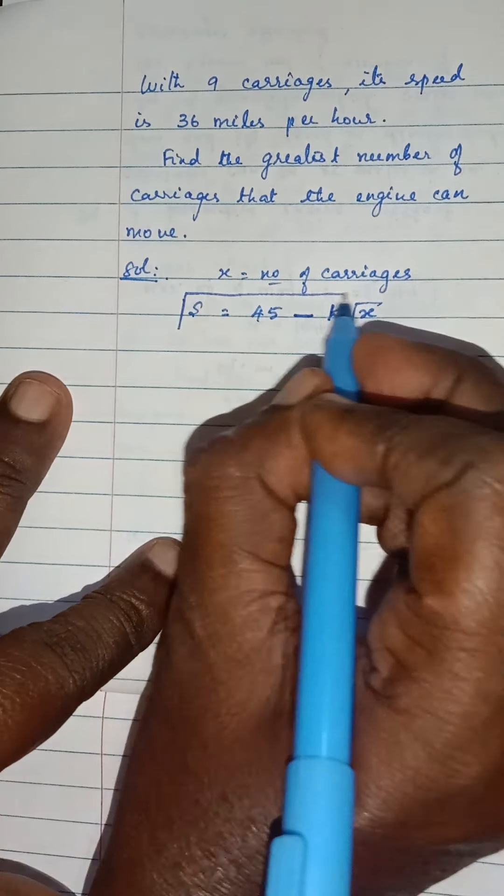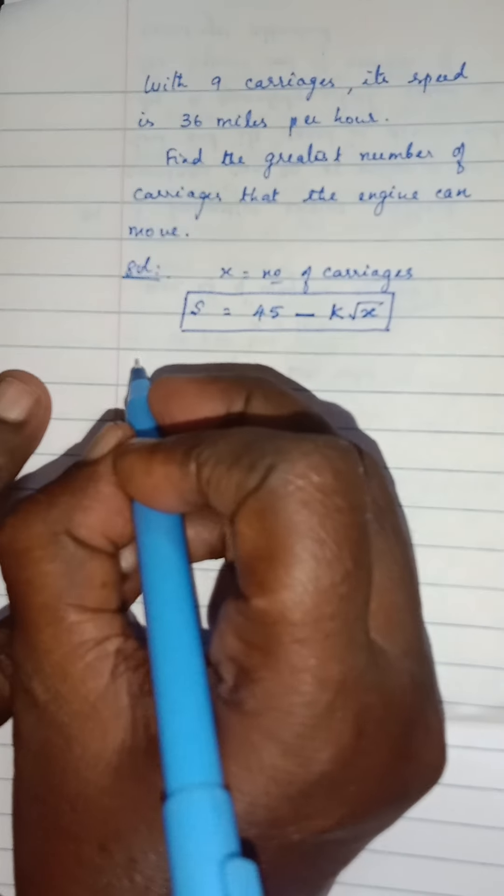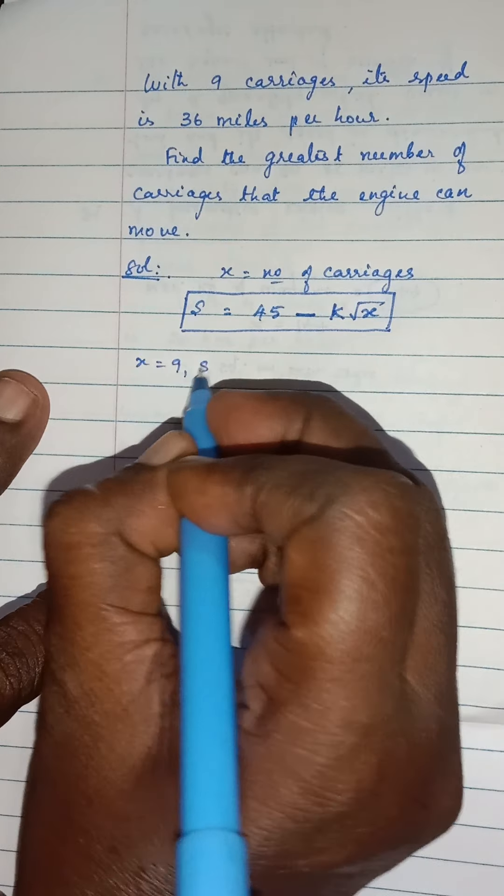The first thing is 9 carriages, x is equal to 9 and S is 36.